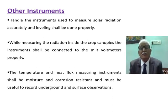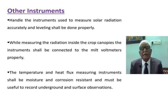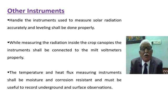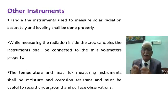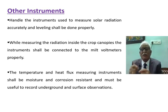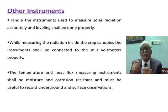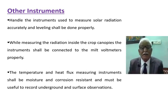The instruments used to measure solar radiation should be handled accurately and leveling must be done properly. While measuring radiation inside the crop canopy for micro-meteorological observations, the instrument shall be connected to the millivolt meter. Always check that the millivolt meter is properly connected, as it can become disconnected due to pressure when moving between crop rows.